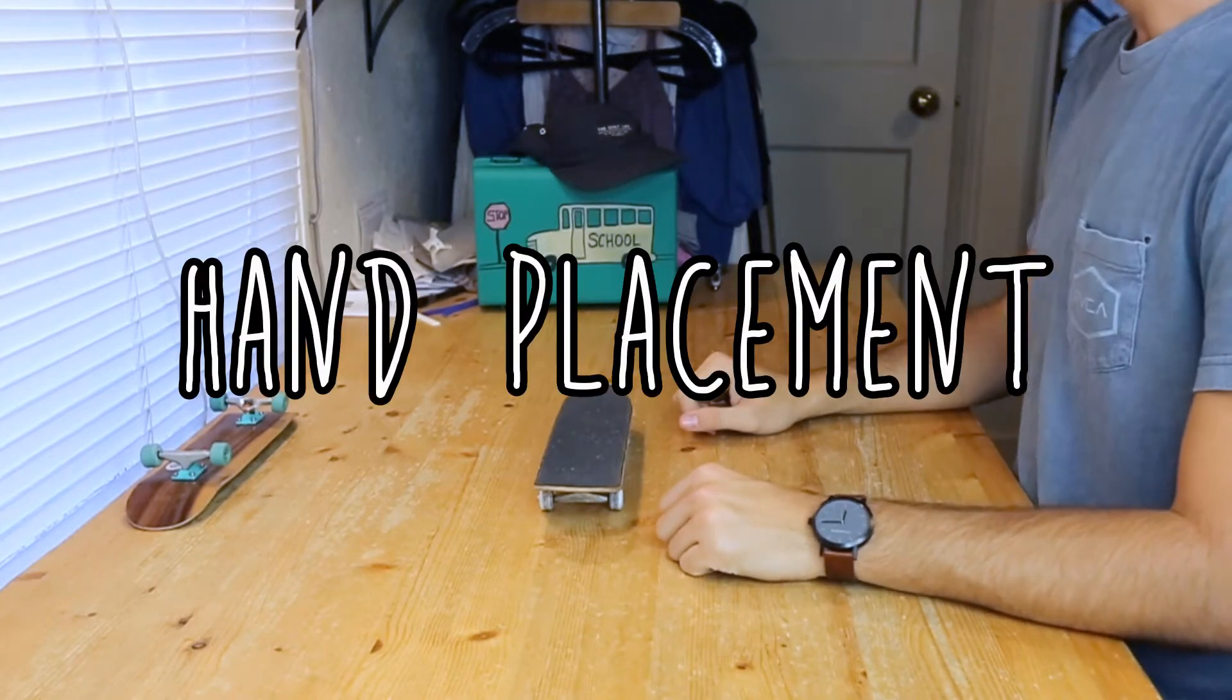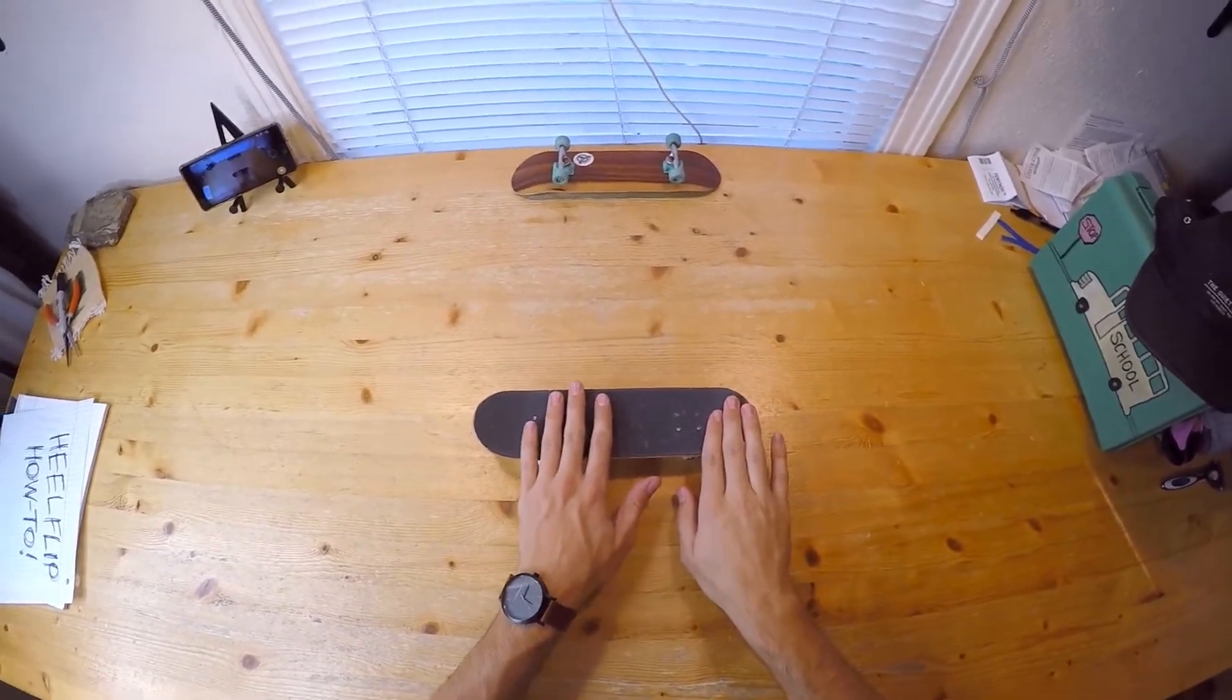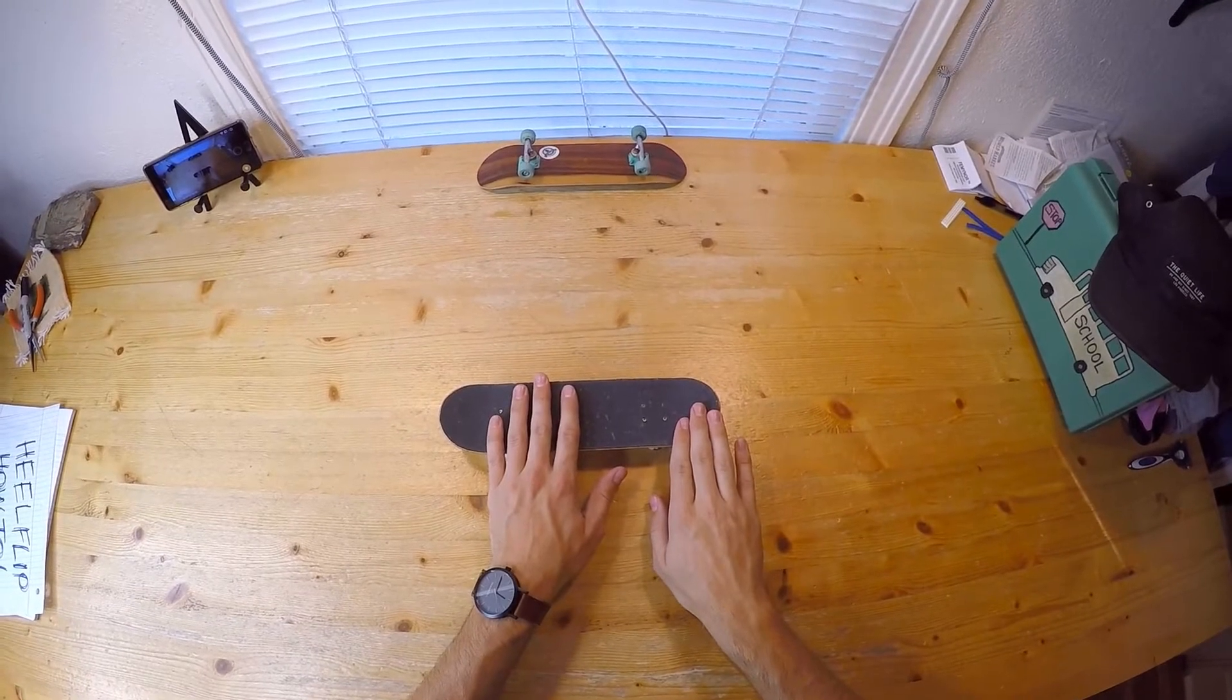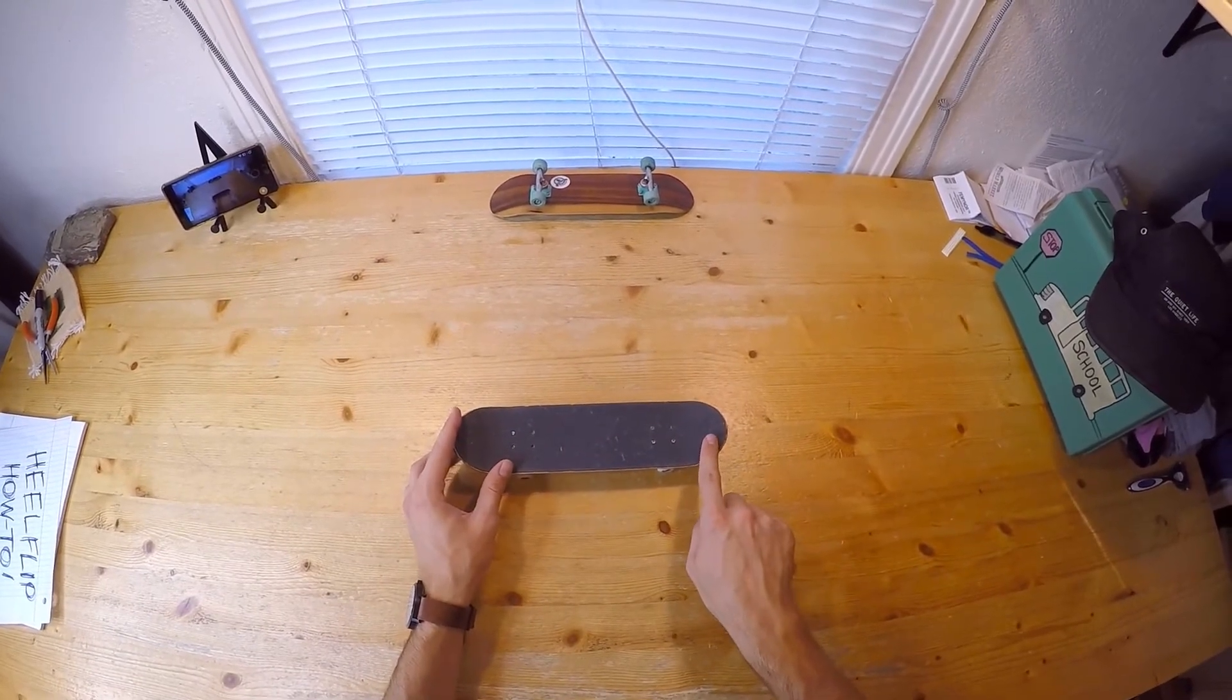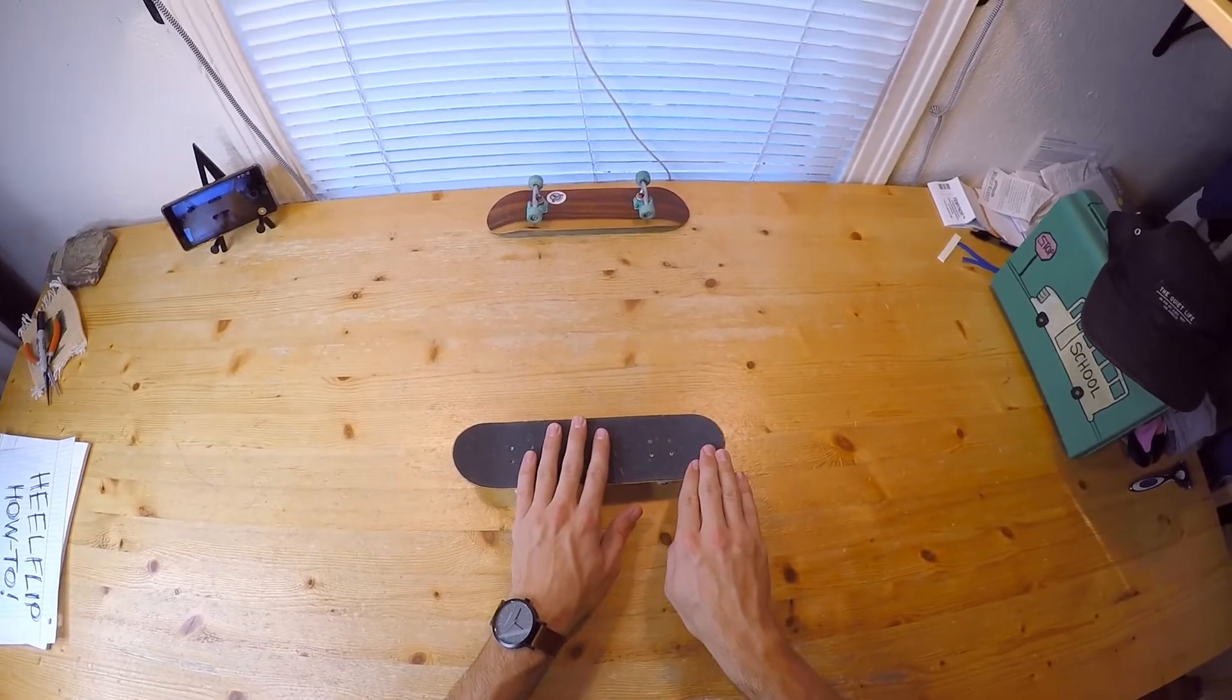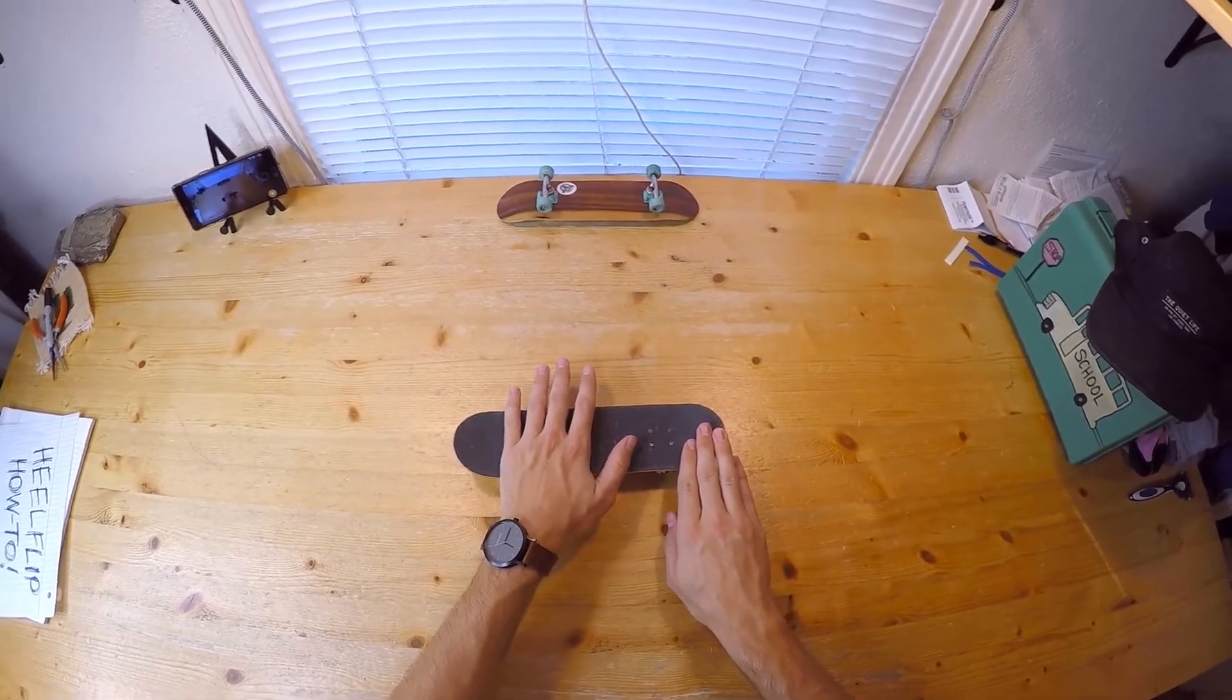Alright, so let's talk about hand placement. For the backhand on an ollie, I put my hands about like this. But for a heel flip, I'm going to pull my backhand slightly towards me, kind of like when you do a heel flip on a real skateboard - you put your feet a little bit further towards you, or at least I do. So my hands are about right here.